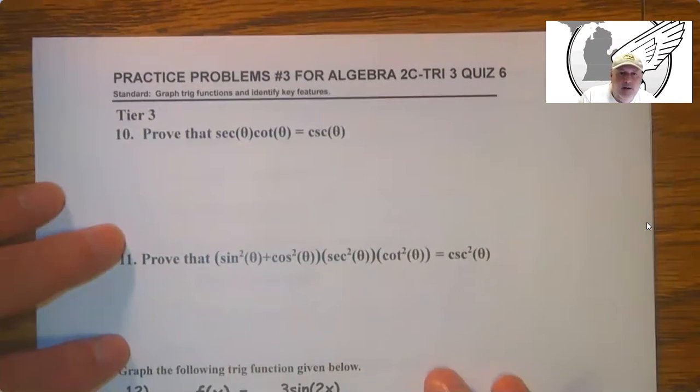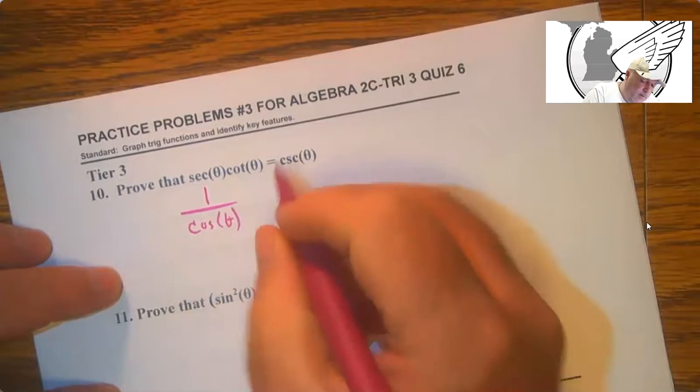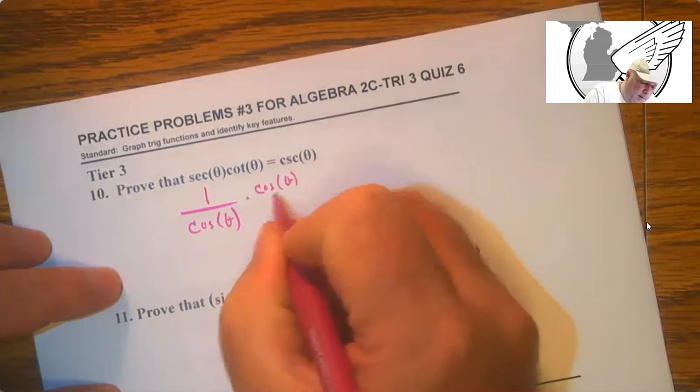And then proving these identities. So again, you want to turn everything into sine and cosine. Let's just cosine over sine.